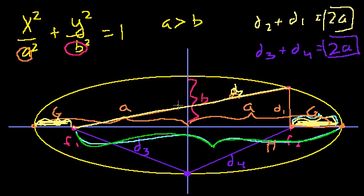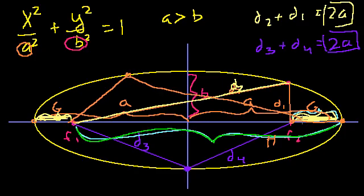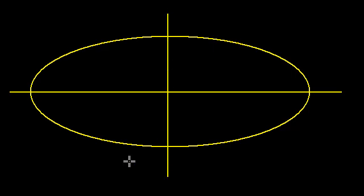Now that we've established that, how do we figure out where the foci are? Given the equation, how can we find those two points? Let me redraw the ellipse and axes. The equation is x squared over a squared plus y squared over b squared equals 1. We have the two foci f1 and f2, symmetric around the center. The ellipse is the locus of all points where the sum of distances to each focus equals 2a.